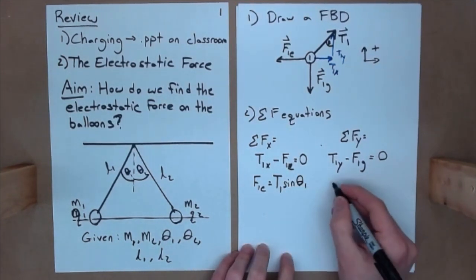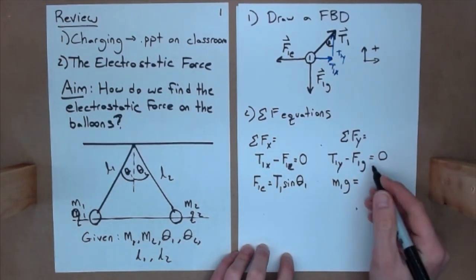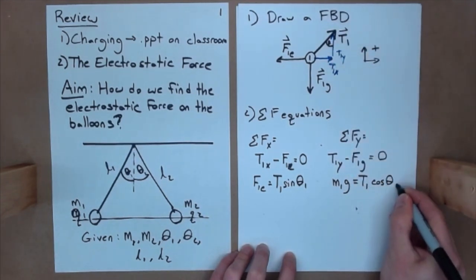Here, I'm going to have that, my Fg, which I can rewrite as M1g, is equal to this here, I'm putting over here, that will be T1, and this time we'll use cosine, right? Cosine of theta 1.